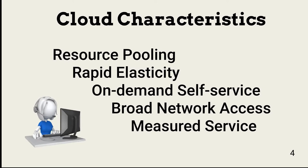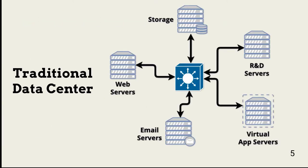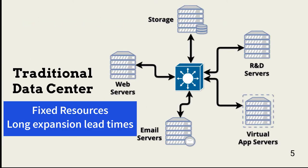Those five characteristics are: resource pooling, rapid elasticity, on-demand self-service, broad network access, and measured service. In traditional data centers, IT purchases a set of resources for each system. For example, sales would have a database server and one or more application servers. Regardless of the amount of processing power used, these resources are dedicated to a single purpose, often resulting in a significant amount of unused processing resources. The amount of resources allocated to sales efforts is fixed, so if additional resources are quickly needed, it isn't easy to expand the processing or storage power.